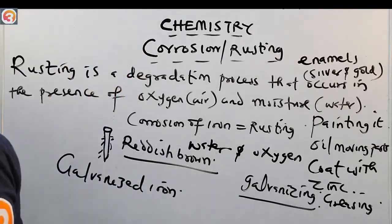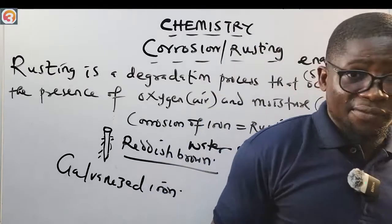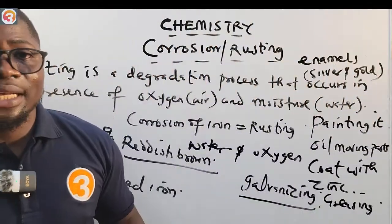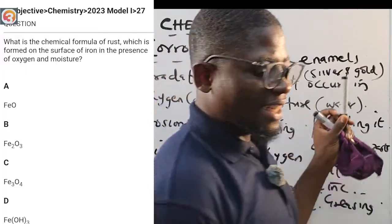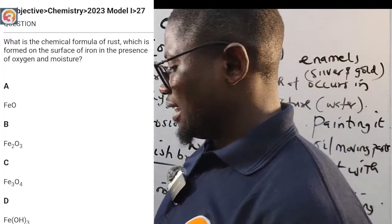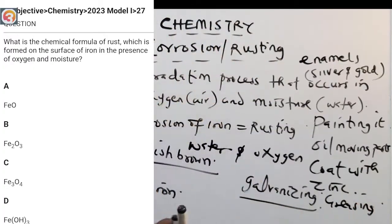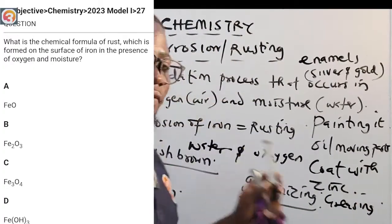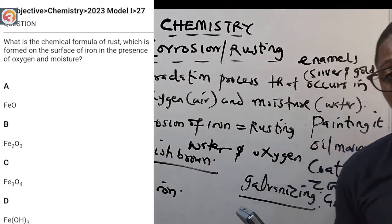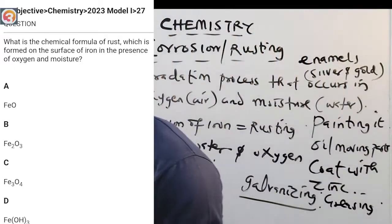Now let's return to the O3 School JAMB app and answer the questions. The 2023 question number 27 asks: what is the chemical formula of rust formed on the surface of iron in the presence of oxygen and moisture? The answer is Fe2O3 — not Fe3O4. So our correct answer is option B.